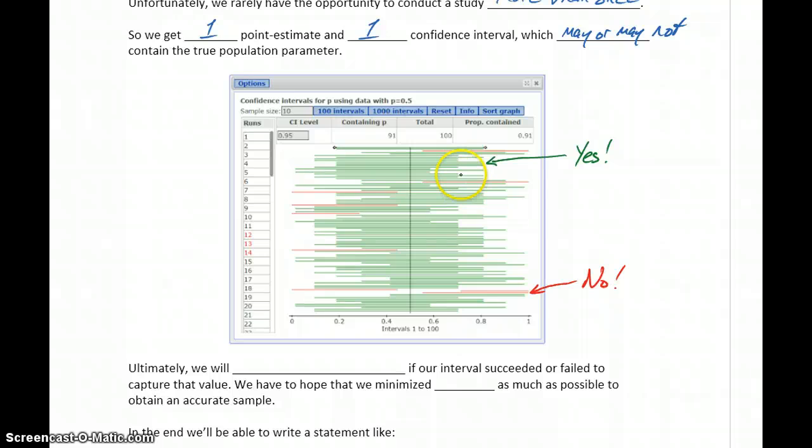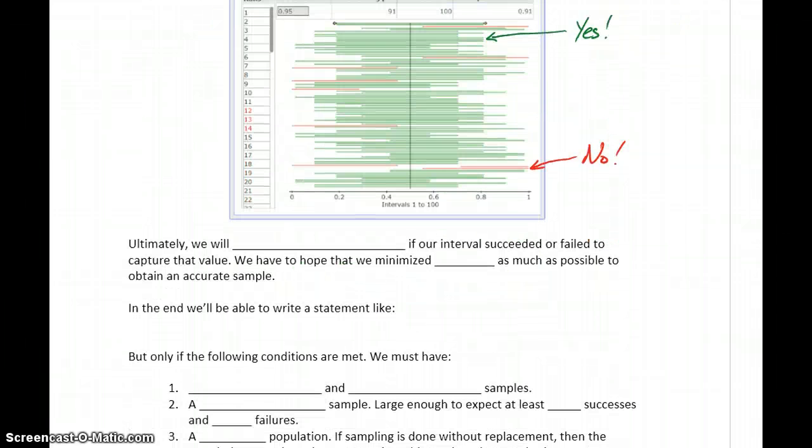Keep in mind, in the real world, we're getting one of these 100 trials. And the problem that arises is we'll never know if our interval succeeded or failed to capture that population parameter that we were trying to estimate. We have to hope that we minimize our bias as much as possible so that we're basing our estimates off of the best possible data.